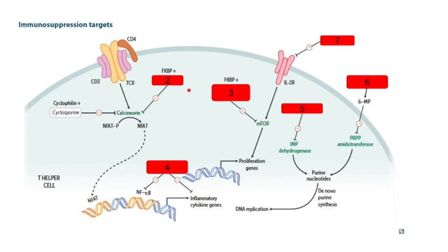What is our agent that through FKBP inhibits calcineurin? That would be tacrolimus. Number three, our agent that works through FKBP and inhibiting mTOR is sirolimus.